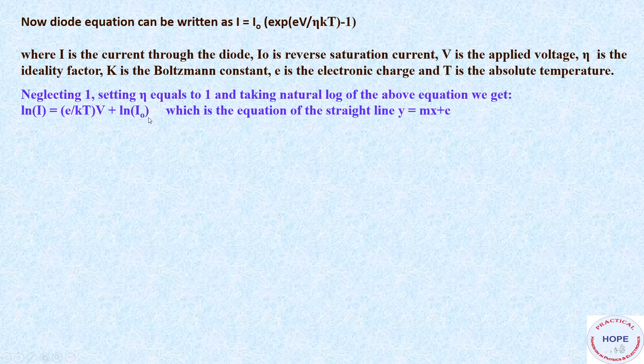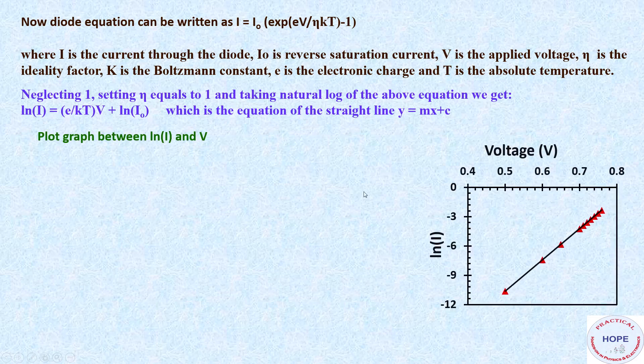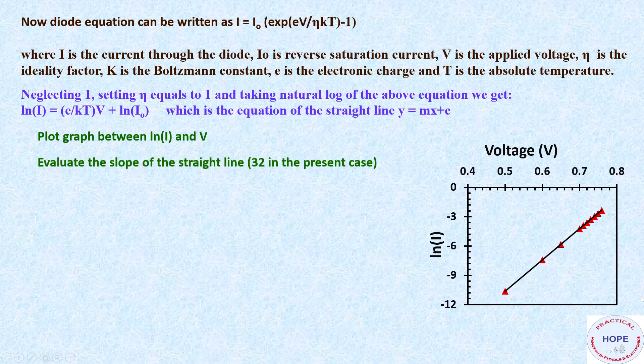So now we'll plot graph between ln I and voltage. So graph looks like this. Now we'll evaluate the slope of this curve. And in the present case, it comes out to be 32.